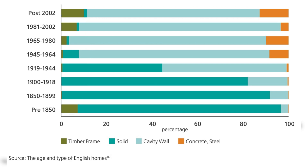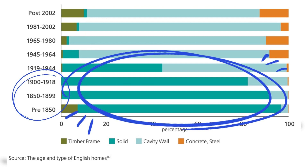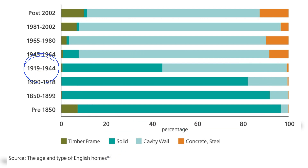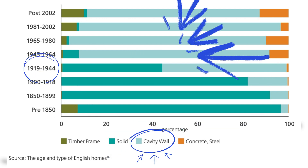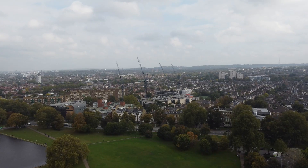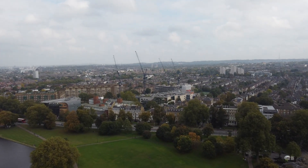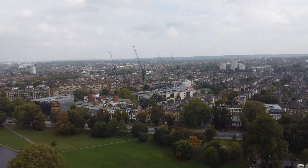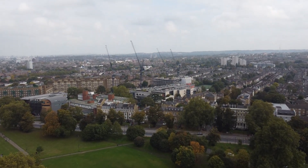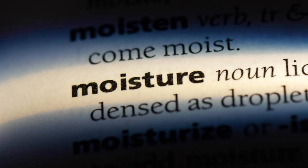The vast majority of buildings built before the First World War were built with solid walls, and then it's the interwar years where we see cavity walls becoming much more prevalent. Why does this make a difference? I'll start by showing how the two are constructed, and you'll see for yourself the challenges that one presents over the other — specifically how each different type manages moisture.